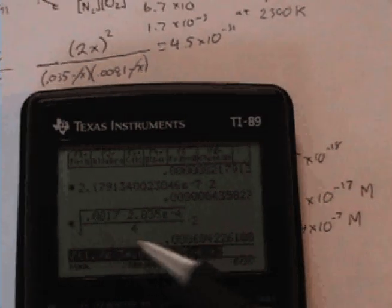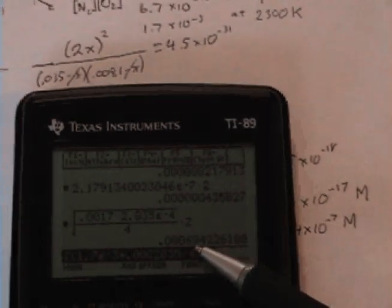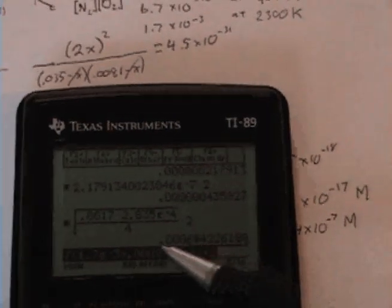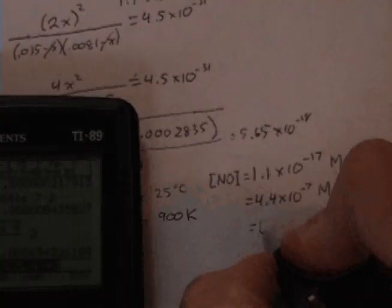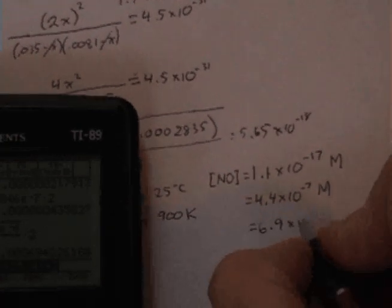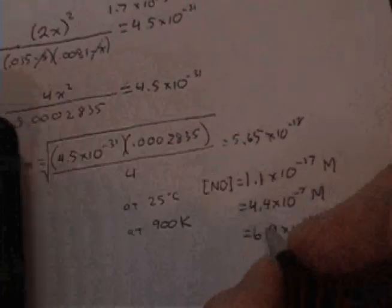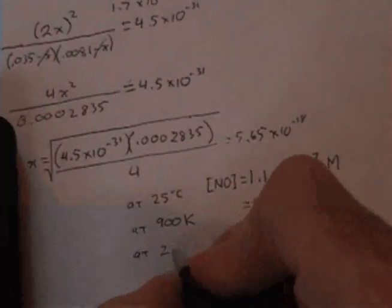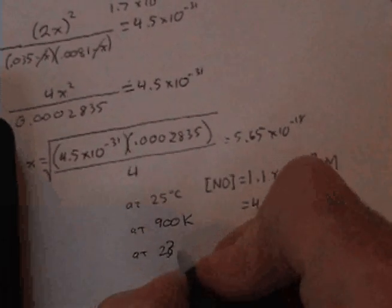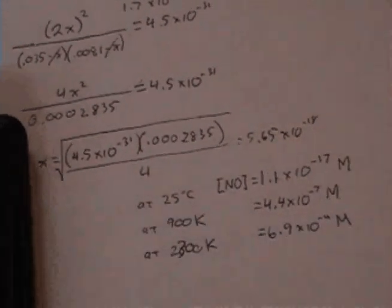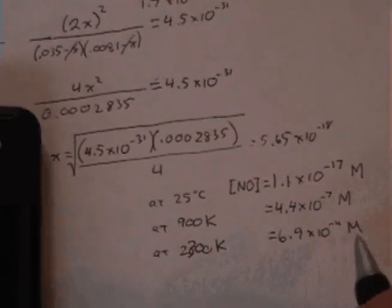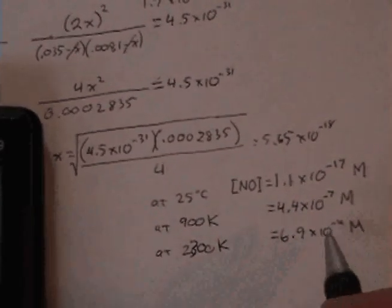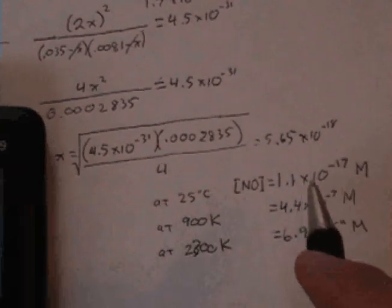And so what we have is 6.9 times 10 to the minus 4th molar at 2300 Kelvin. So now here we're definitely talking about significant concentrations.